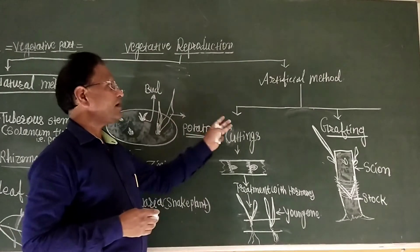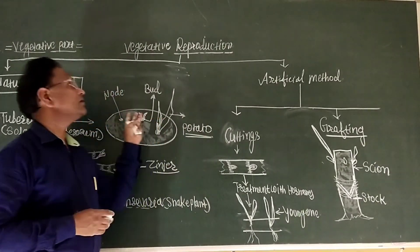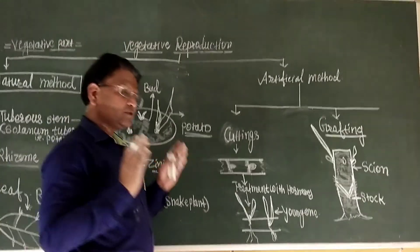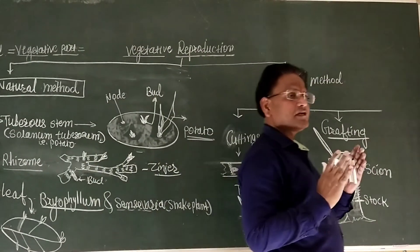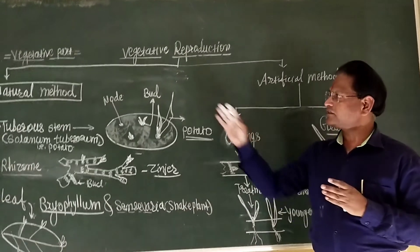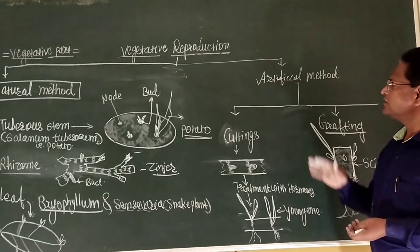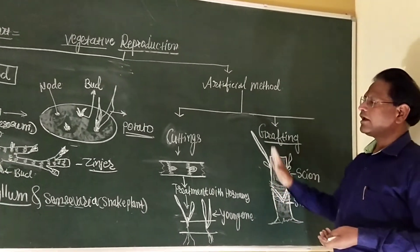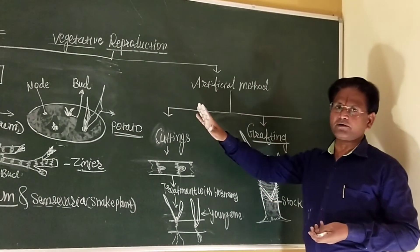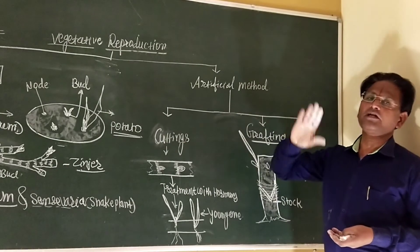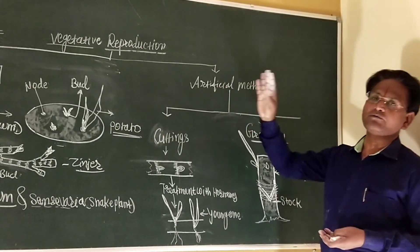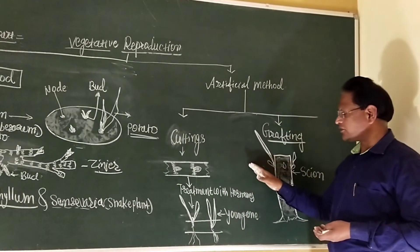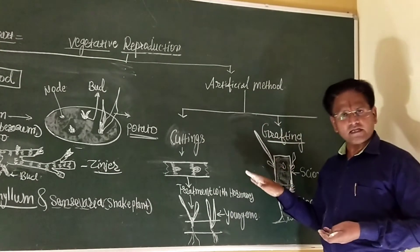These are the two methods of vegetative reproduction: the natural method, in which man-made techniques are not utilized, and the artificial method, in which man-made techniques are utilized. The grafting process is generally carried out in horticulture and floriculture.